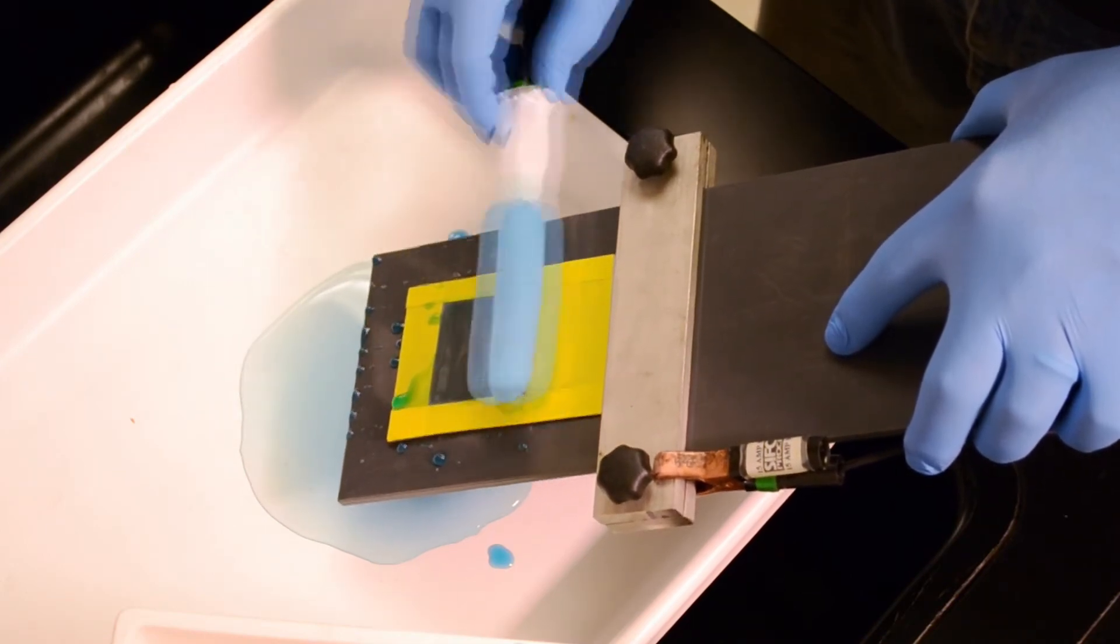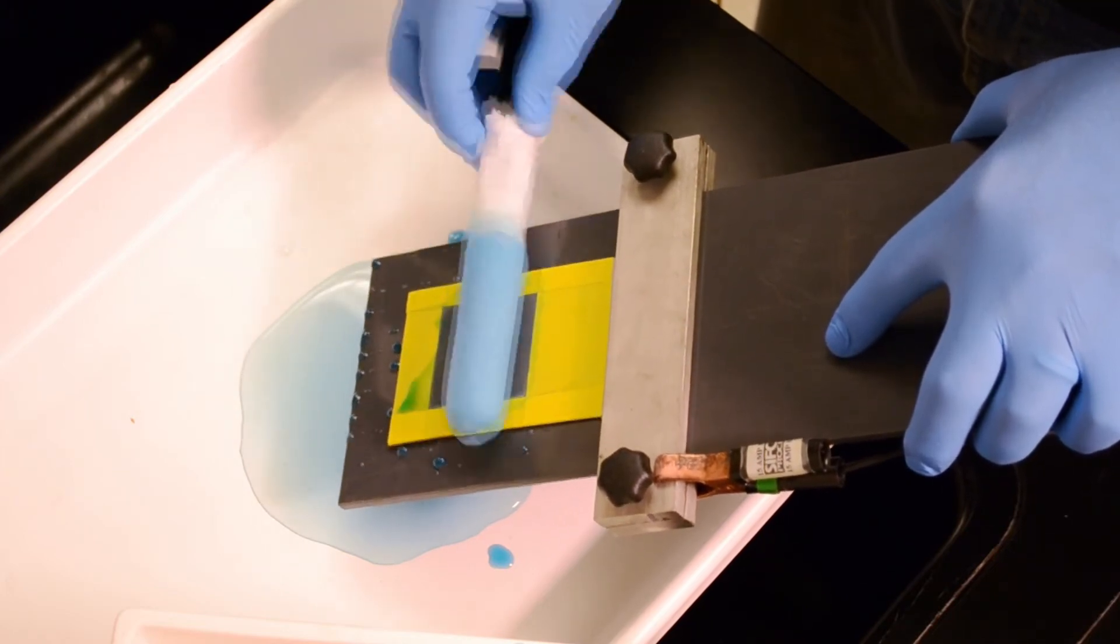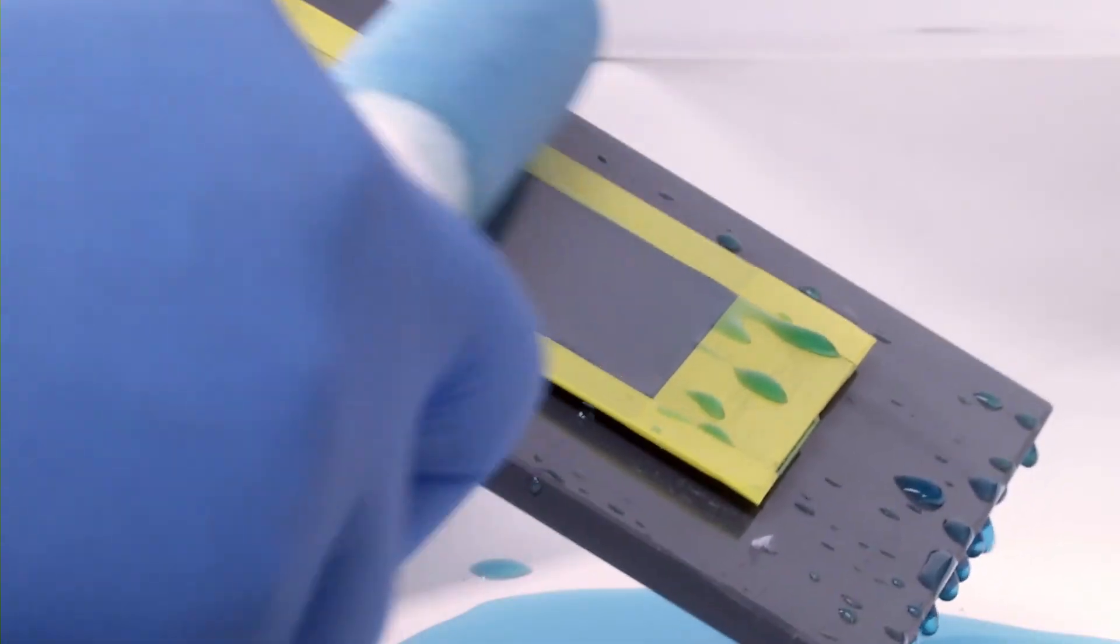It's important to note that the specification requires that only fresh solution be applied to the part. That is, the solution should not be recirculated or reused when hydrogen embrittlement is a concern.